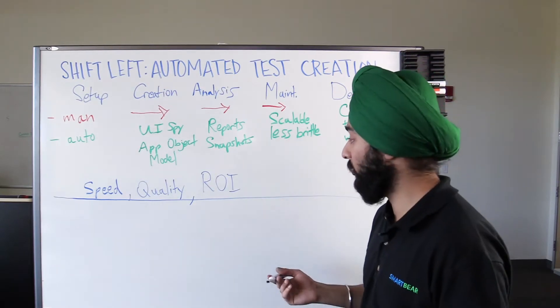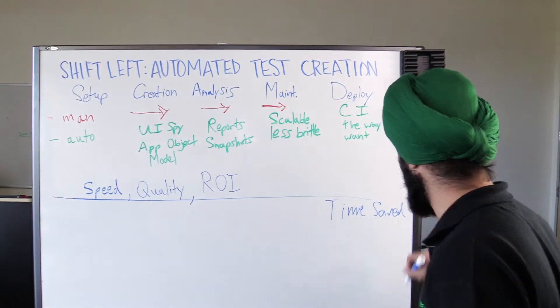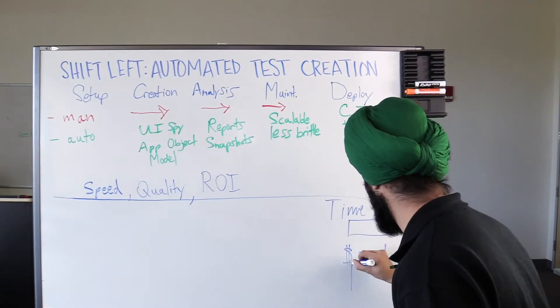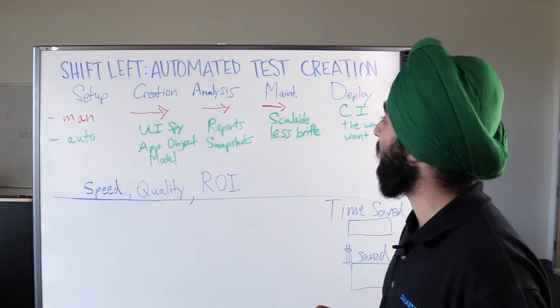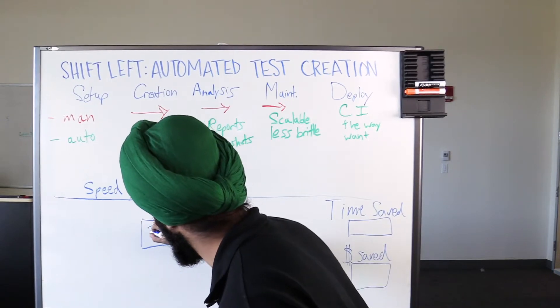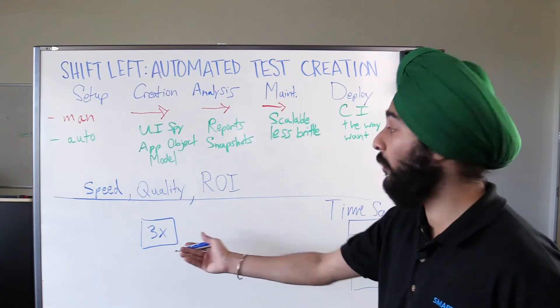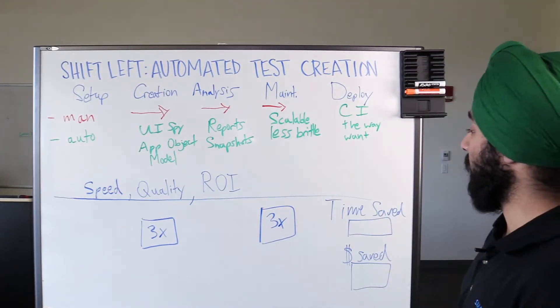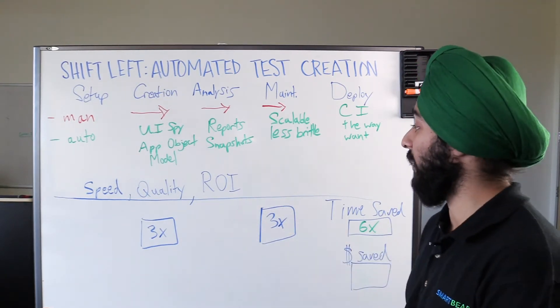With ROI specifically, we could look at ROI in terms of time saved or dollar amount saved. With a good tool, you're going to save three times the amount of time you would implementing your entire testing framework architecture test cases than you would with an open source tool. That's going to sell very well into the maintenance of your test scripts—it's perhaps another three times the amount of time saved. So now you're getting six times the amount of time saved using a good tool to implement a shift left type of strategy versus using an open source framework.